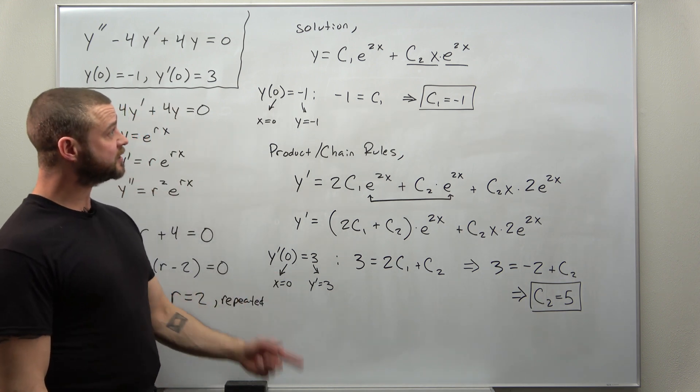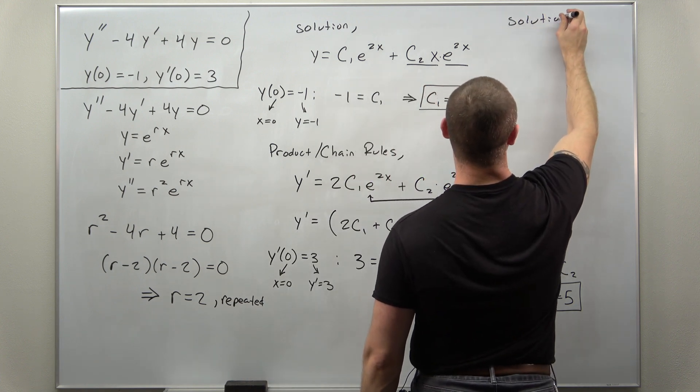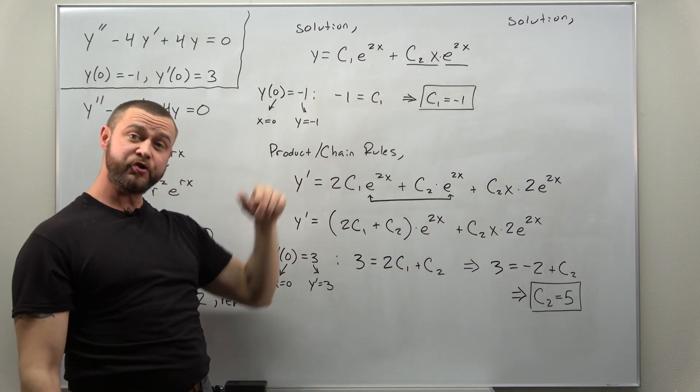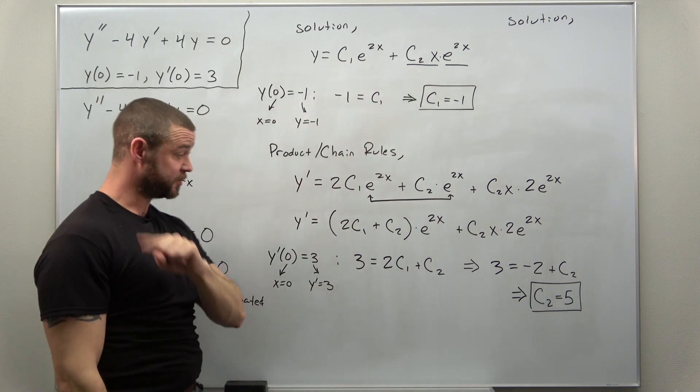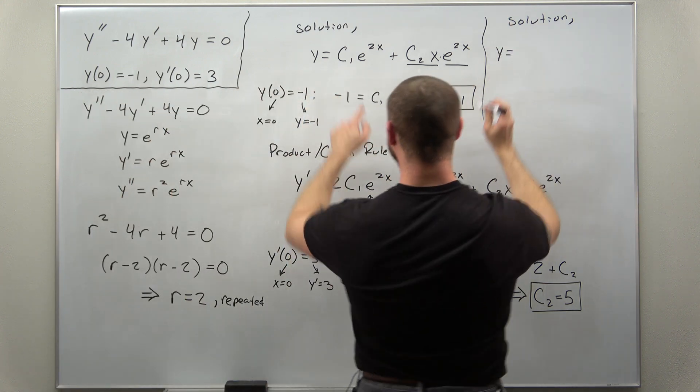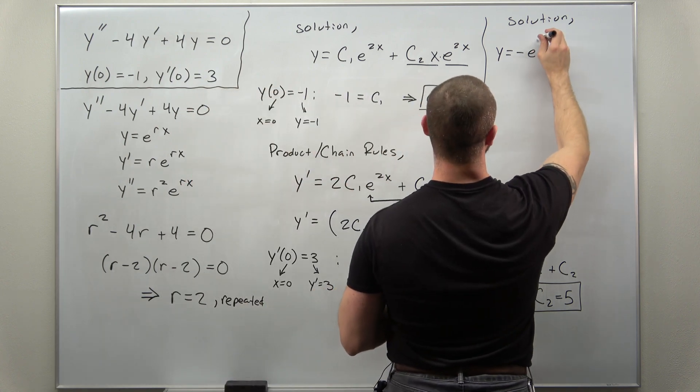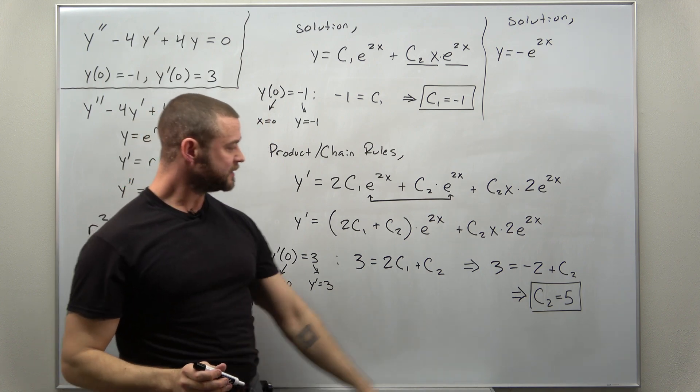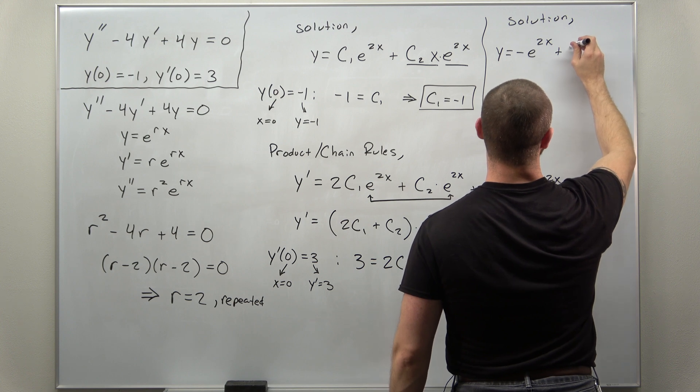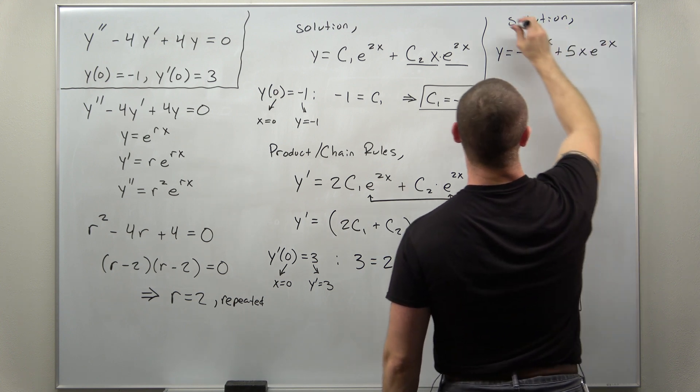So if we were to write down our solution, we'll cram it in at the top here. We're basically just replacing c1 and c2 in the general solution that we found before. It looks like what we get is c1 as negative 1, and we found c2 as 5. So we get as our second part here plus 5x e to the 2x.